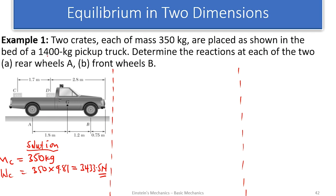The mass of the truck (empty) is 1400 kg. The weight of the truck is 1400 × 9.81 = 13,734 N. Now we have all the weights — let's draw the free body diagram of the truck.